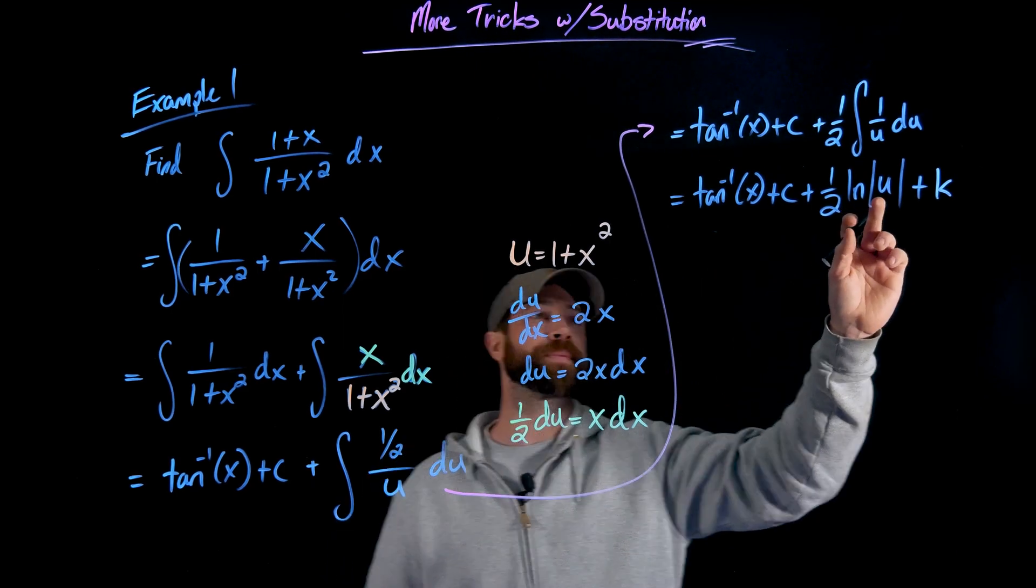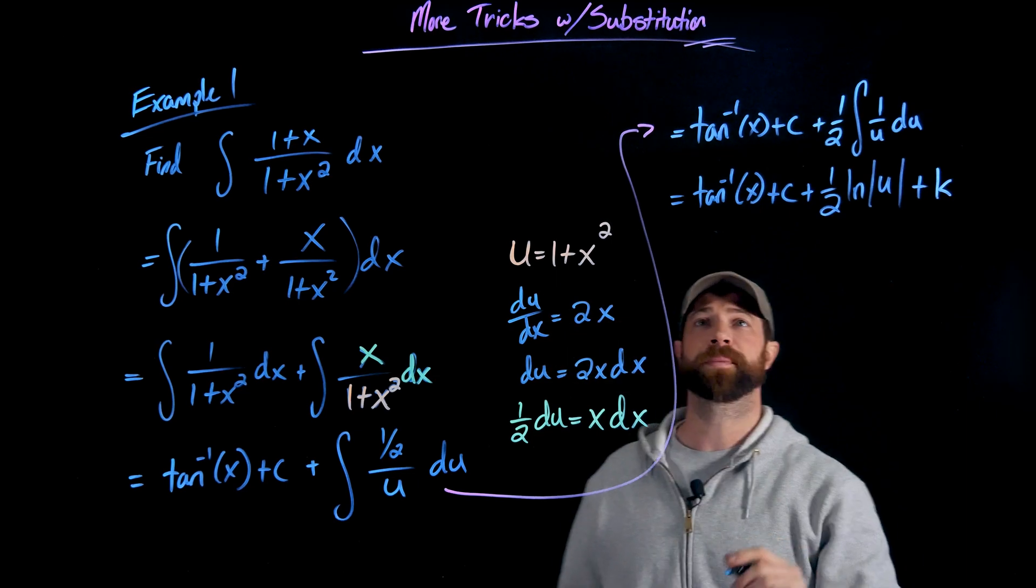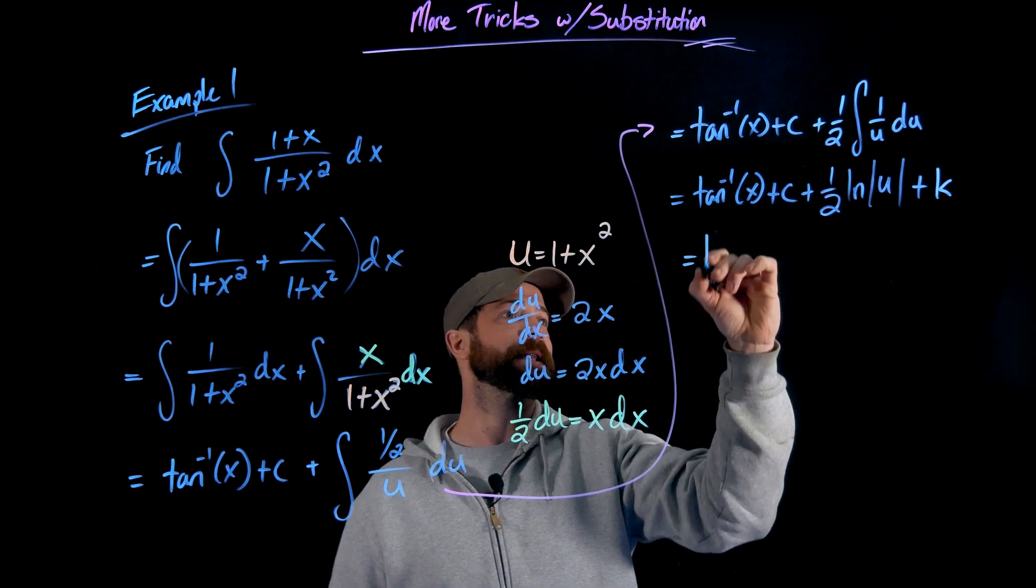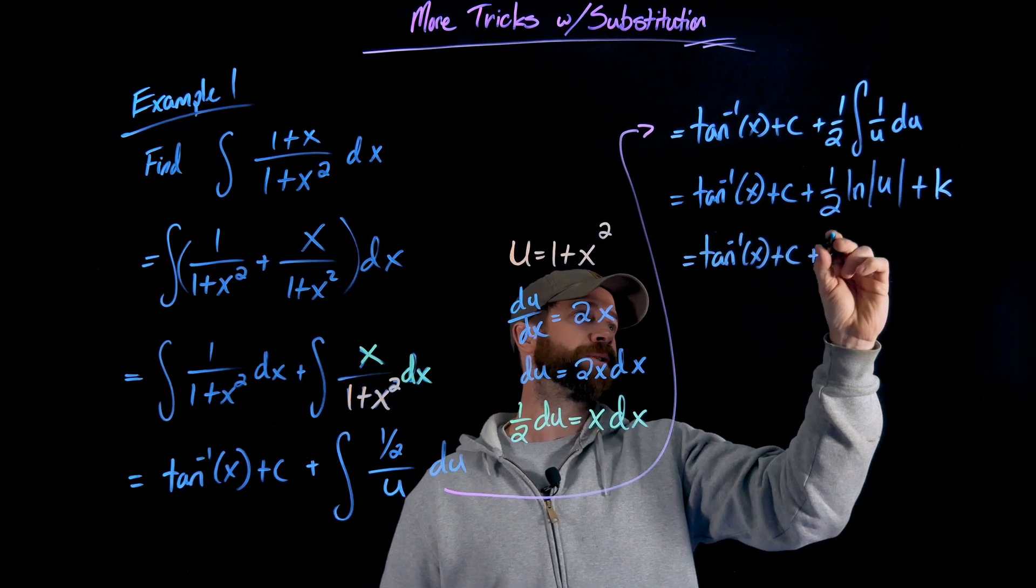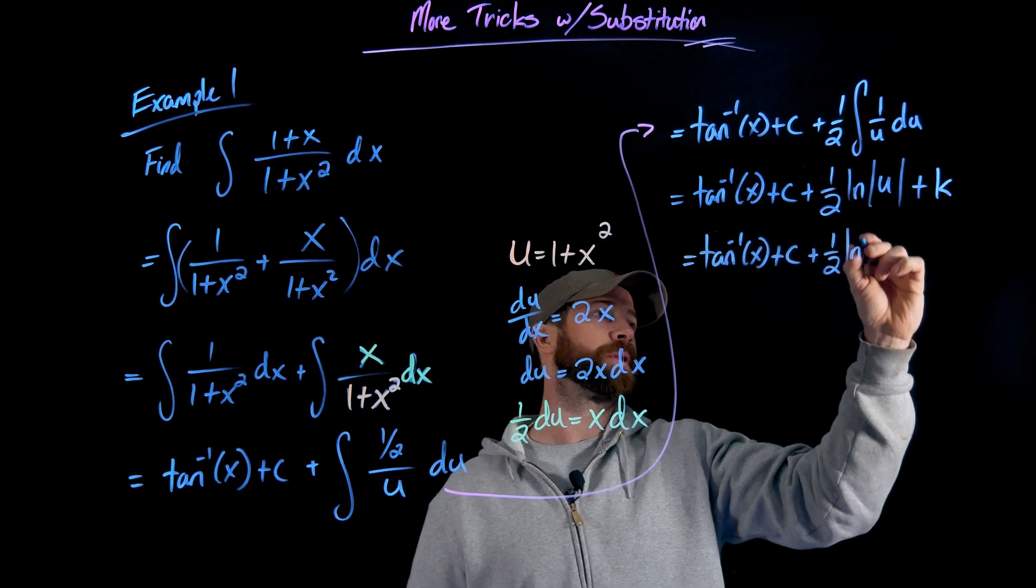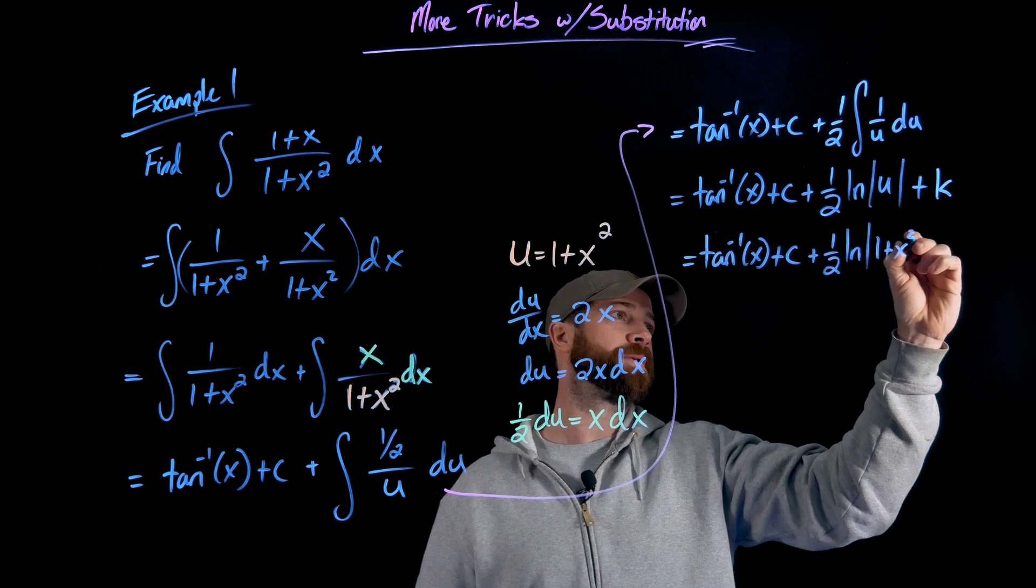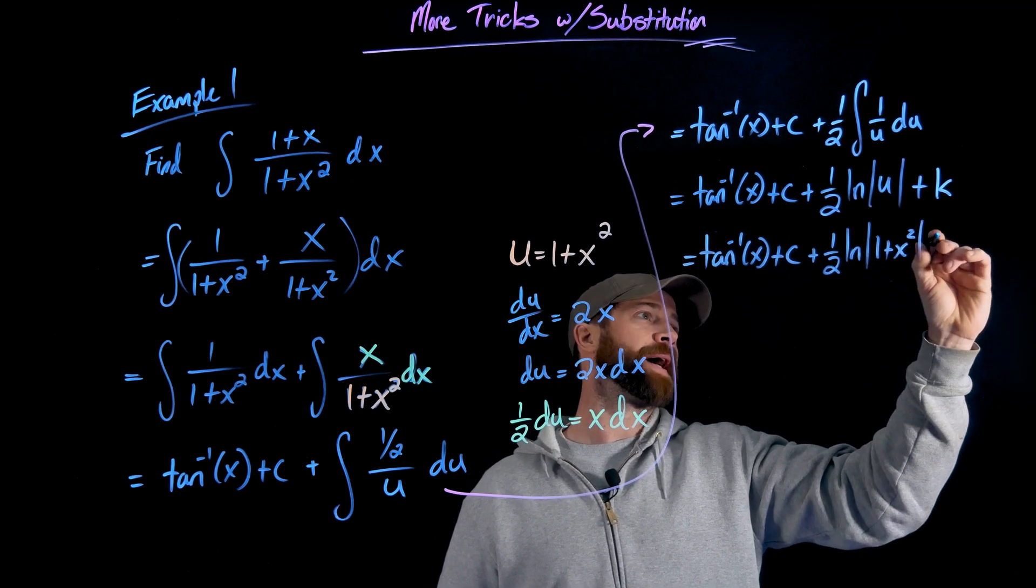Then what I'll get here is I'll replace this u with this 1 plus x squared. So I get that this is the tan inverse of x plus c plus 1/2 the natural log of 1 plus x squared, the absolute value of that, plus k.